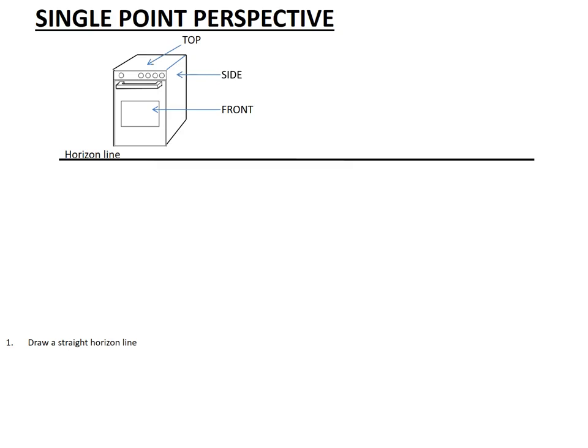Then we go to step number two. The second step that you need to do is to mark a point on the line and name it the VP. It does not matter where you draw the point. It may be to the far right of your line or to the far left or even in the center. It does not matter.